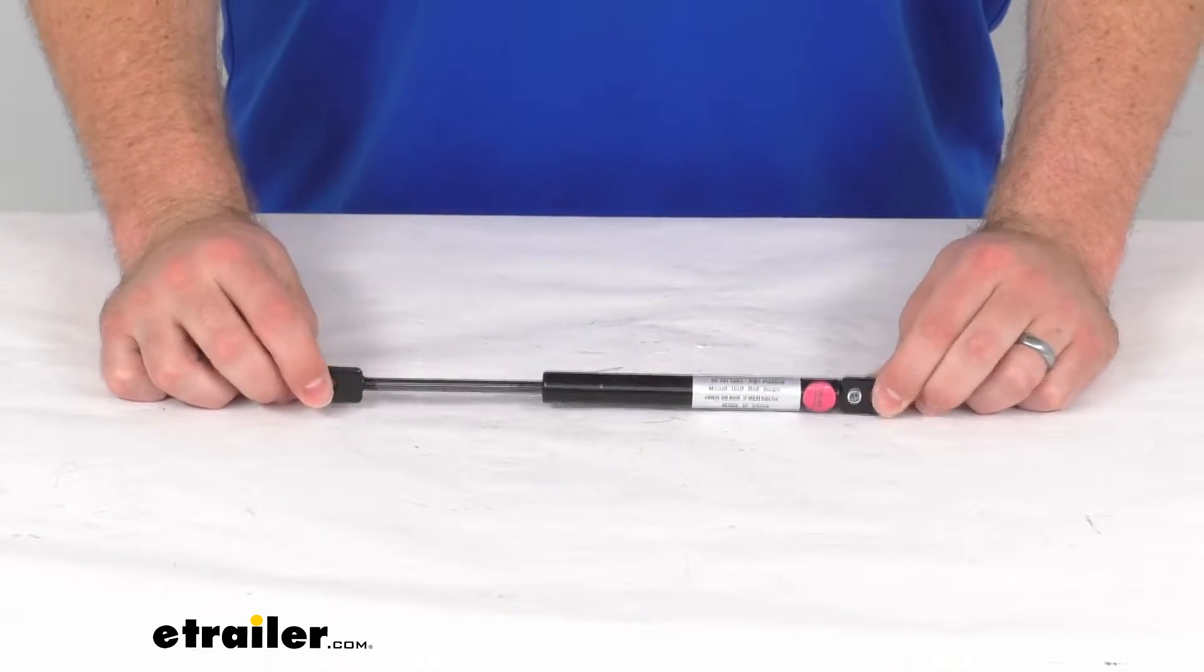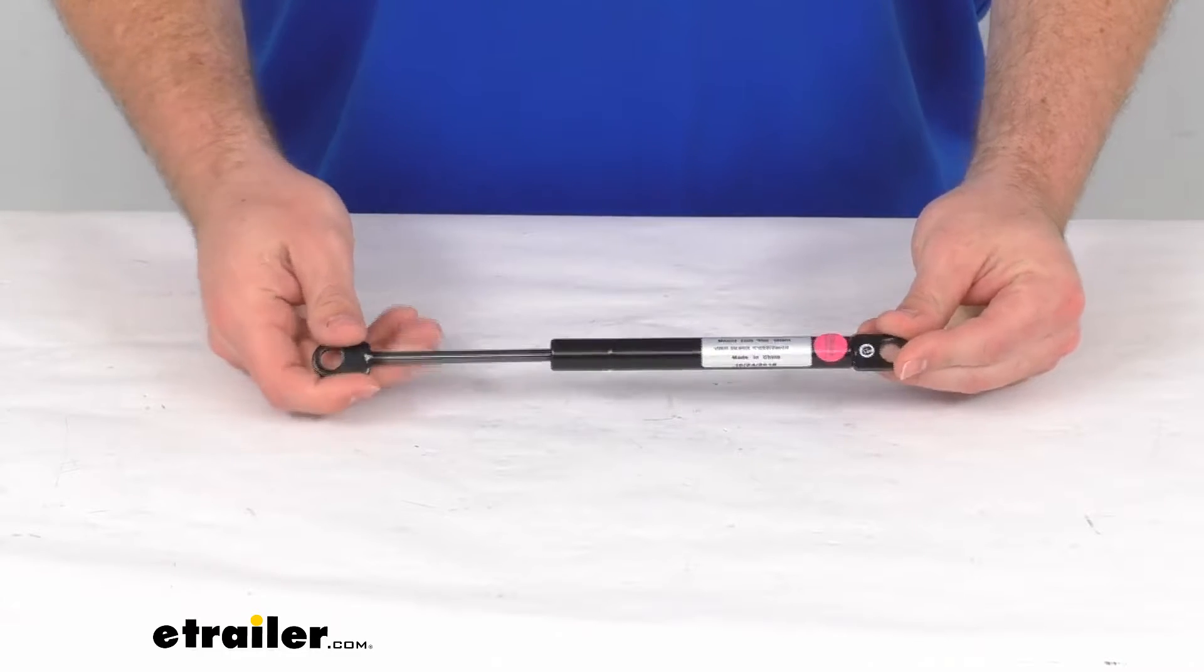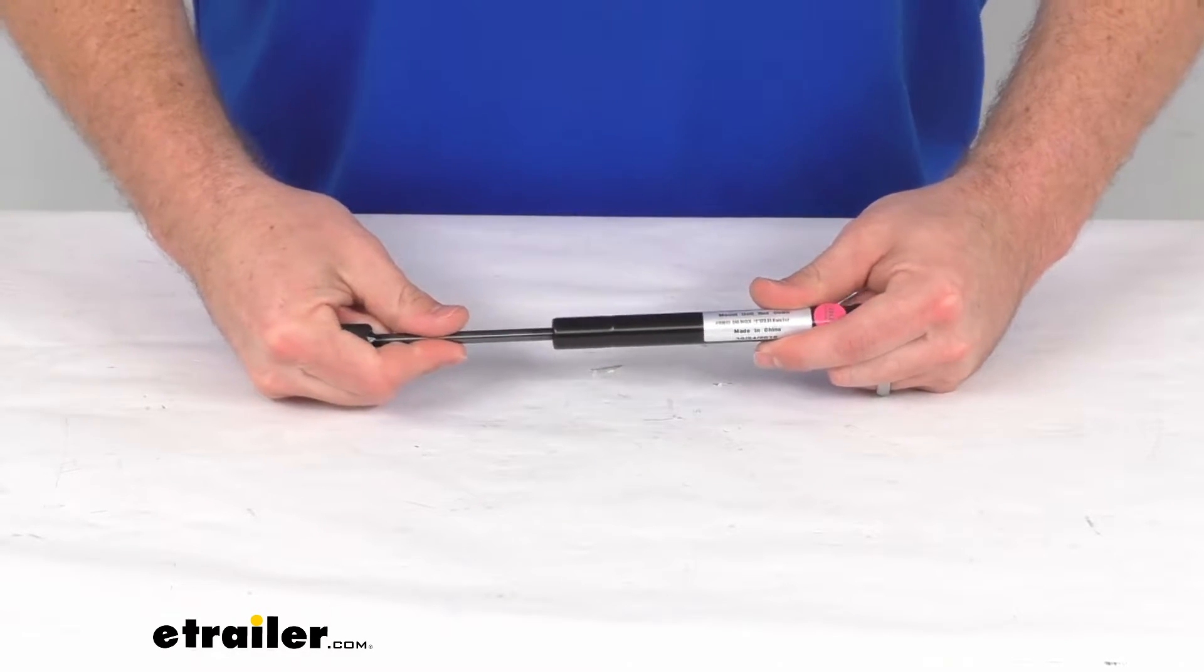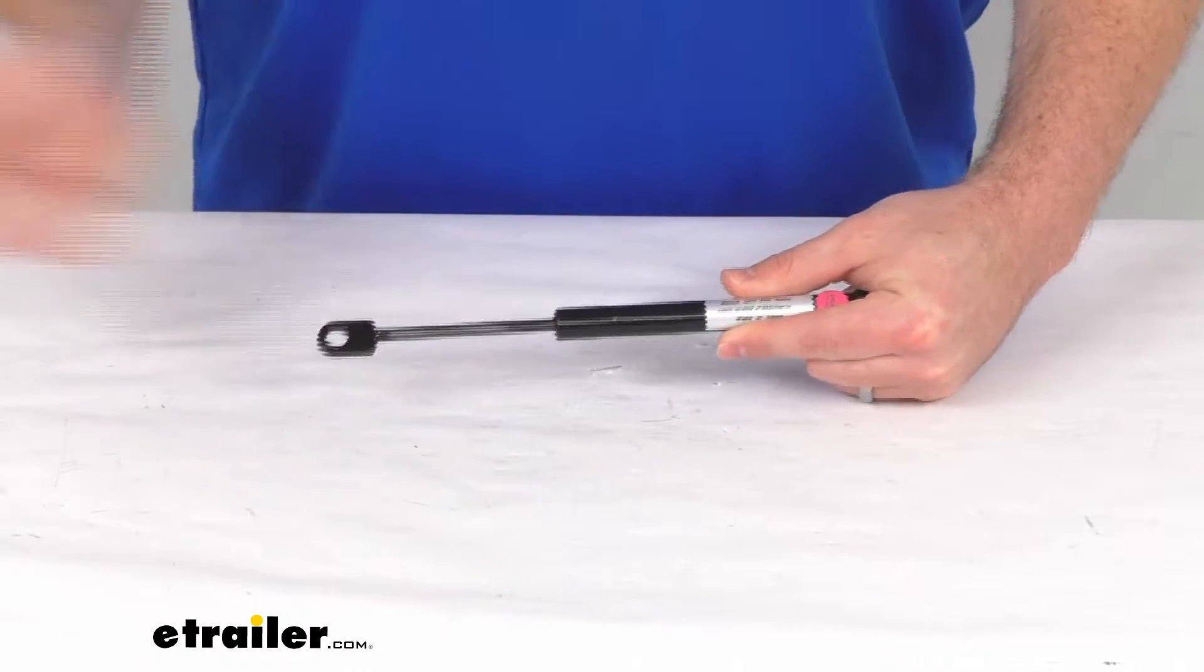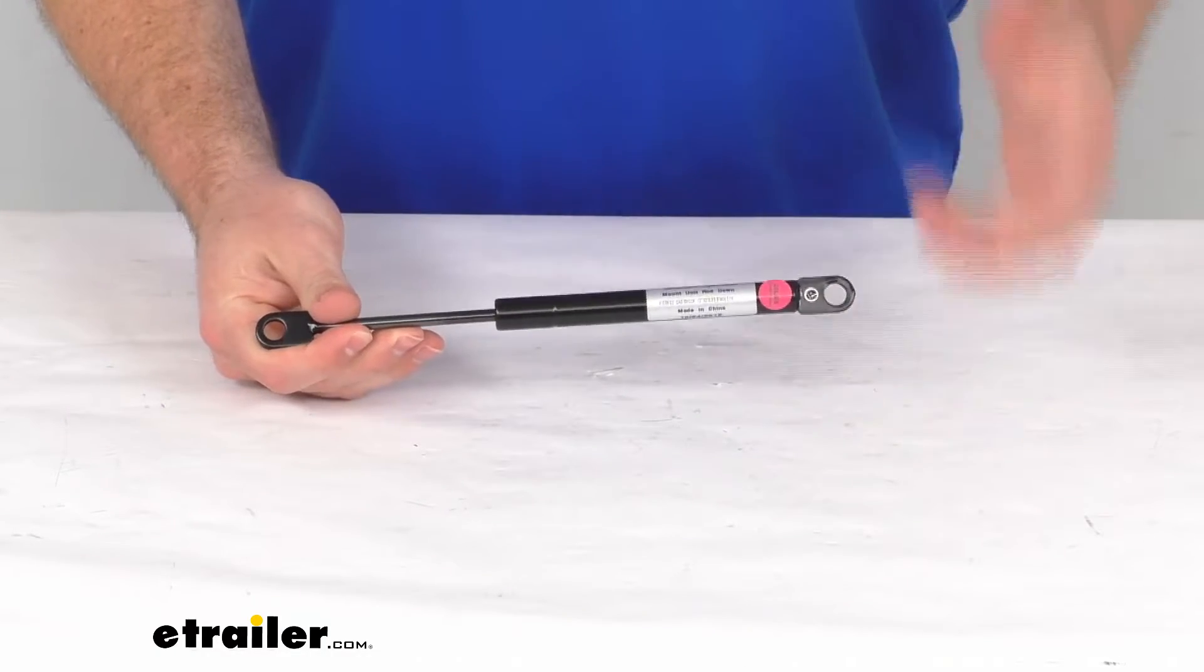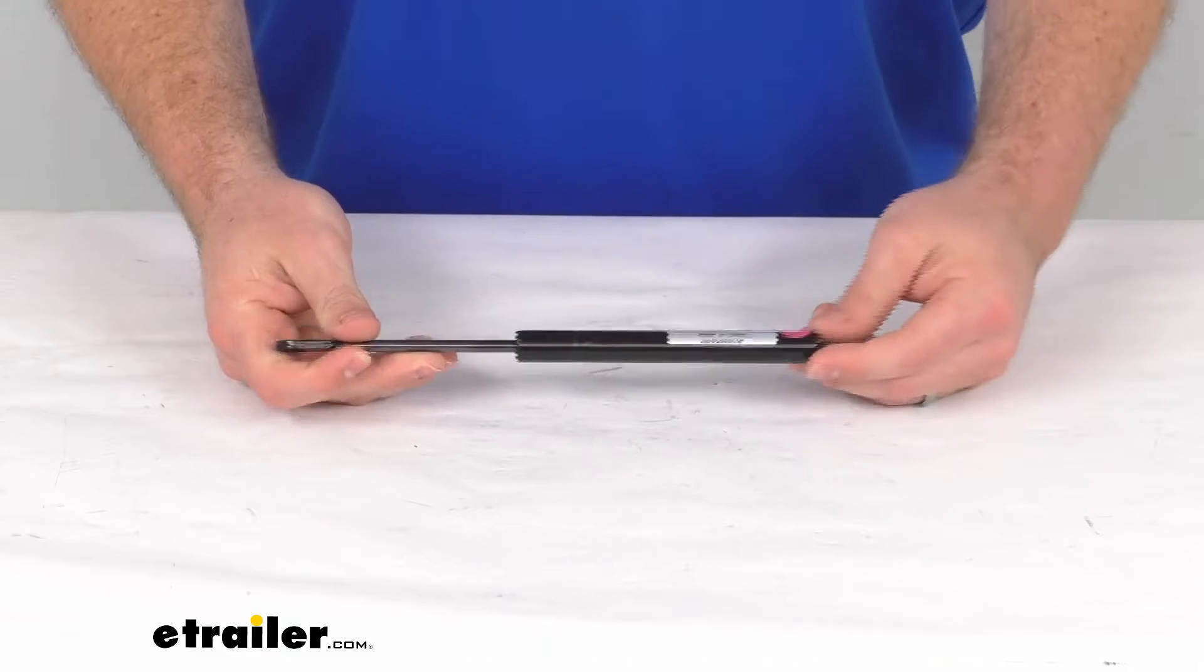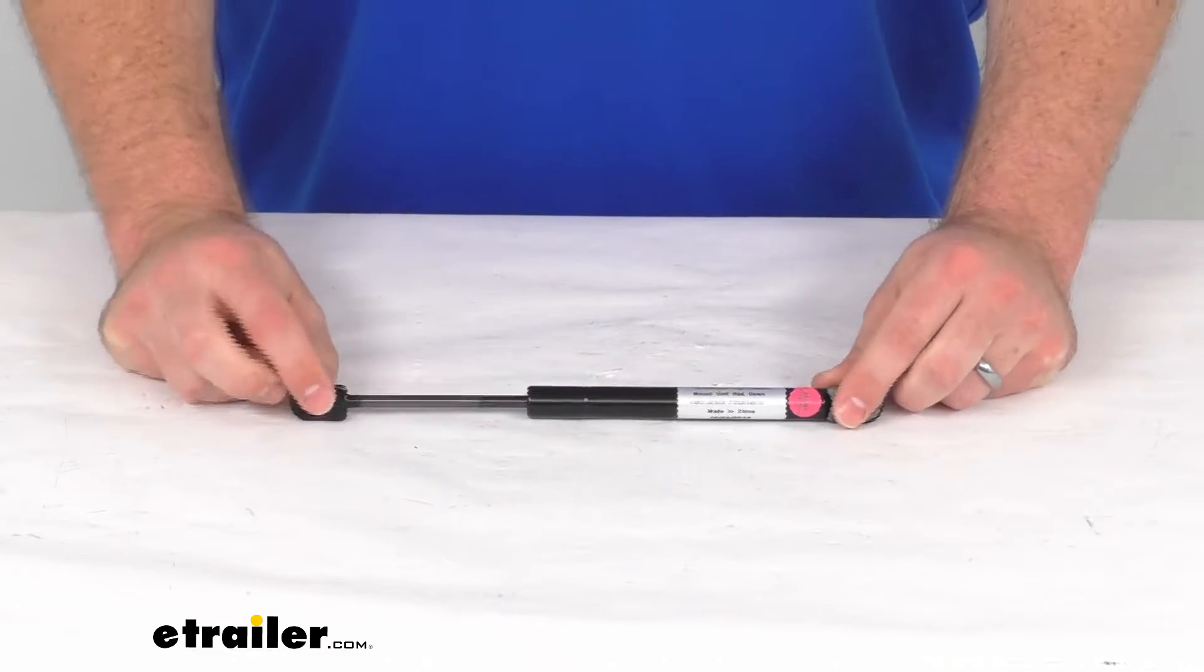This is going to work on your boat hatch to make sure that it's going to be a little bit easier for you to open up the hatch, and it's not going to allow it to slam shut and potentially cause damage to your gear or to yourself. So really nice option here.